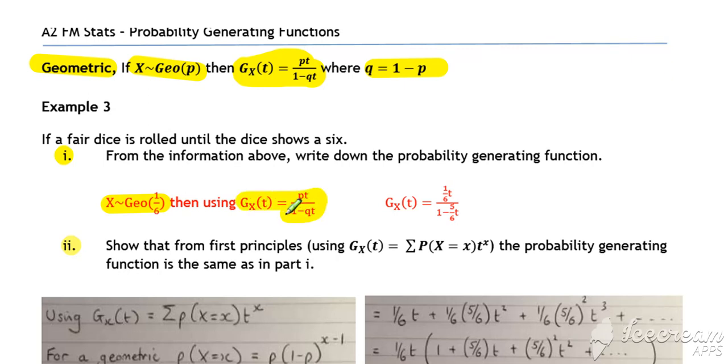Use our standard quotable results. Substitute your p and q values in and we get 1 sixth t over 1 minus 5 sixth t as our probability generating function for this Poisson.